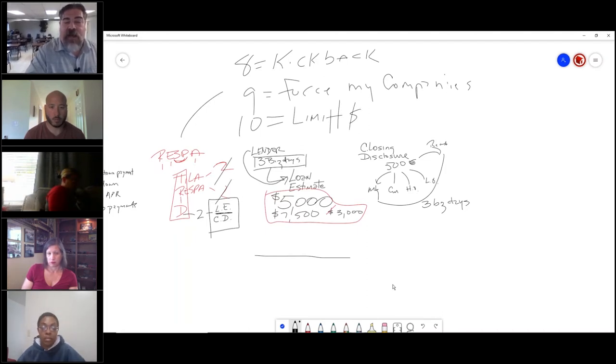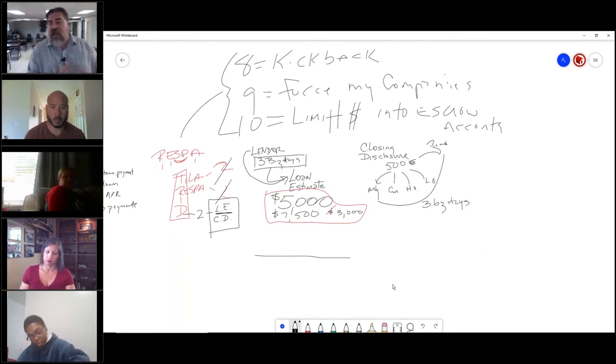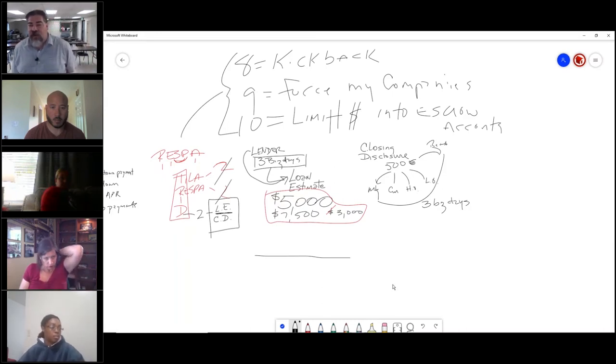And section 10 limits the money into the new buyer's escrow accounts. So those are the three sections that you'll probably get questions on that deal with RESPA, the settlement procedure. I cannot pay for a lead. I can't force the other side of the table to buy from the company I choose. And I, the seller, the new owner, has limits on to how much he can start his escrow accounts with.